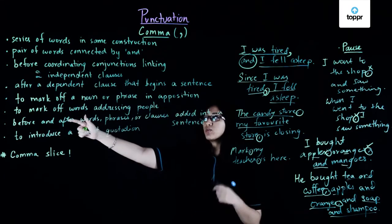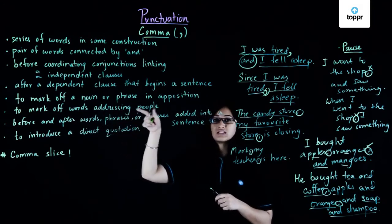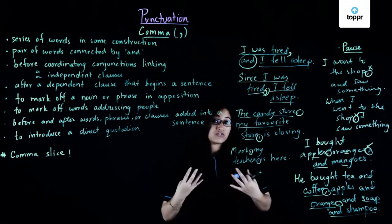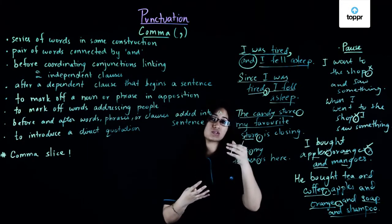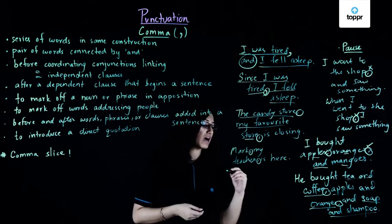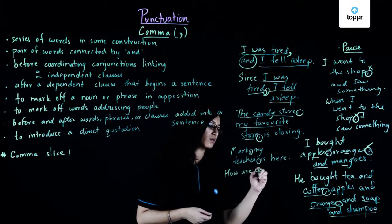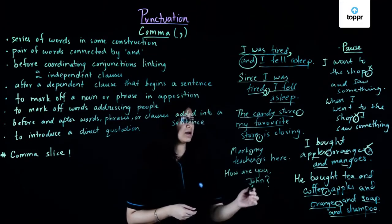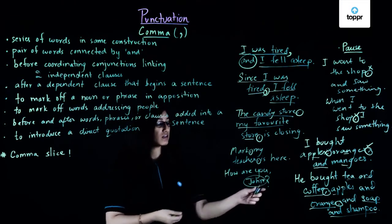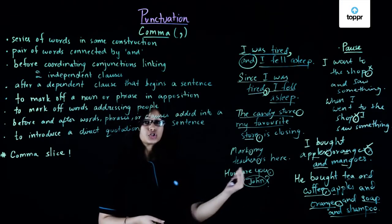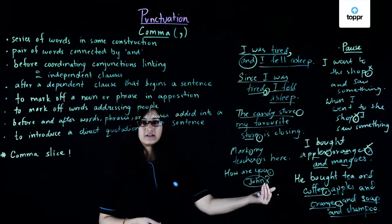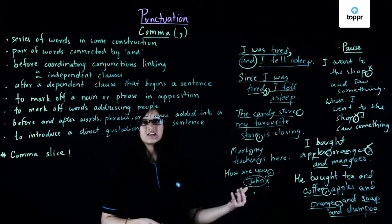Let's take a look at another way we use commas: to mark off words addressing people. In some sentences we might need to add the name of a person or a word that addresses a particular person, and we use a comma to separate out that word. For example: 'How are you, John?' Before adding the word 'John', which addresses a person, I have added a comma. Similarly, in 'There you are, Mary,' I use a comma before the word addressing the person.